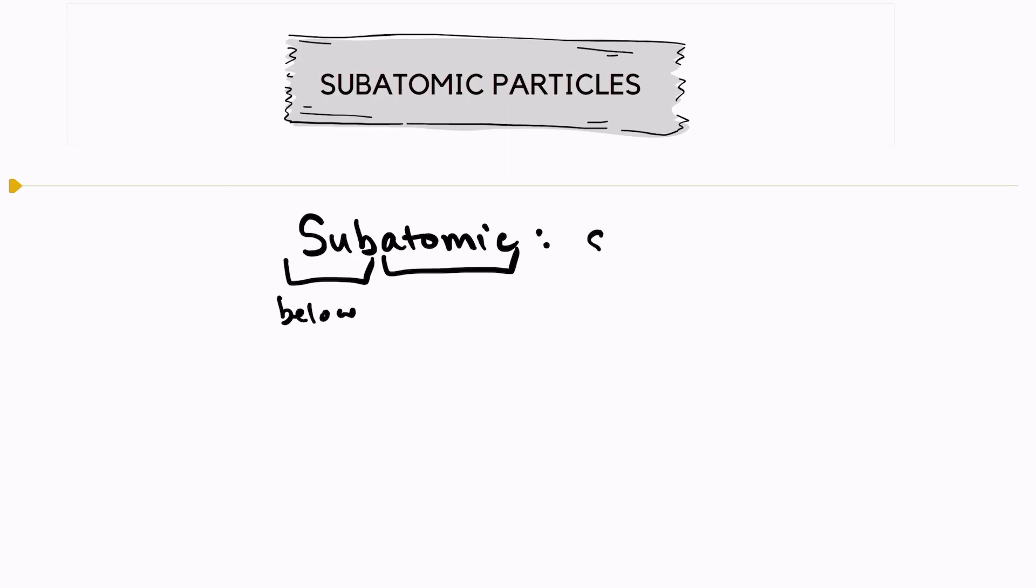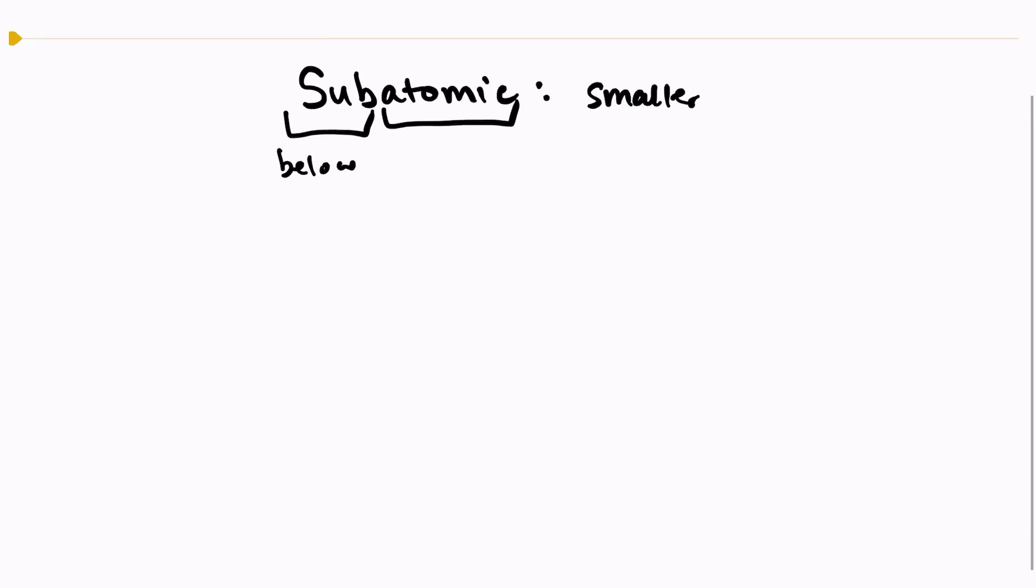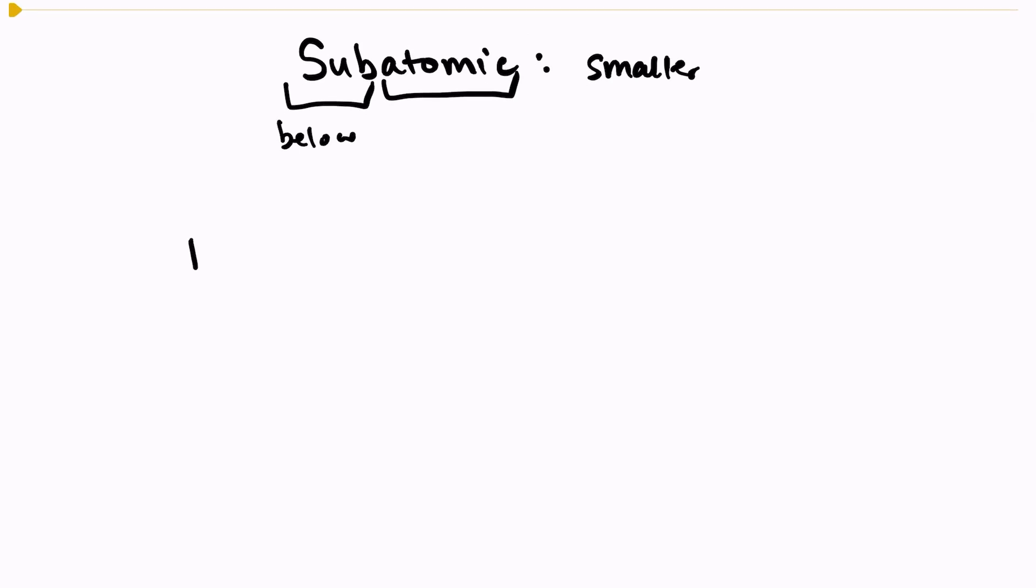So when we hear subatomic particles, we're just thinking of particles that are smaller than the atom. The three subatomic particles are protons, neutrons, and electrons.